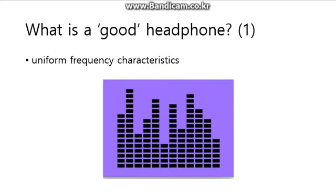How can you define a good headphone? The first reason is uniform frequency characteristics. The frequency characteristic is something you can control with your MP3 player or computer — you may find EQ controls like vocal type, jazz type, concerto, and user EQ. In short, this EQ is the frequency characteristic, and uniform frequency characteristic means the headphone can reproduce sounds accurately.